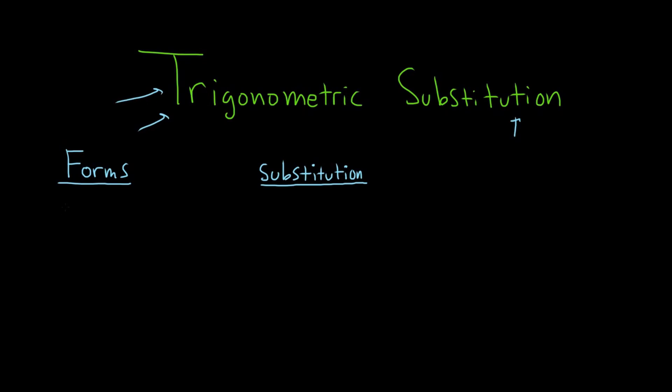The first form is the square root of a squared minus u squared. So if you have this form, then in theory you can use a trig substitution. You would let u equal a sin theta. So it's just worth memorizing. That would be your trig substitution.